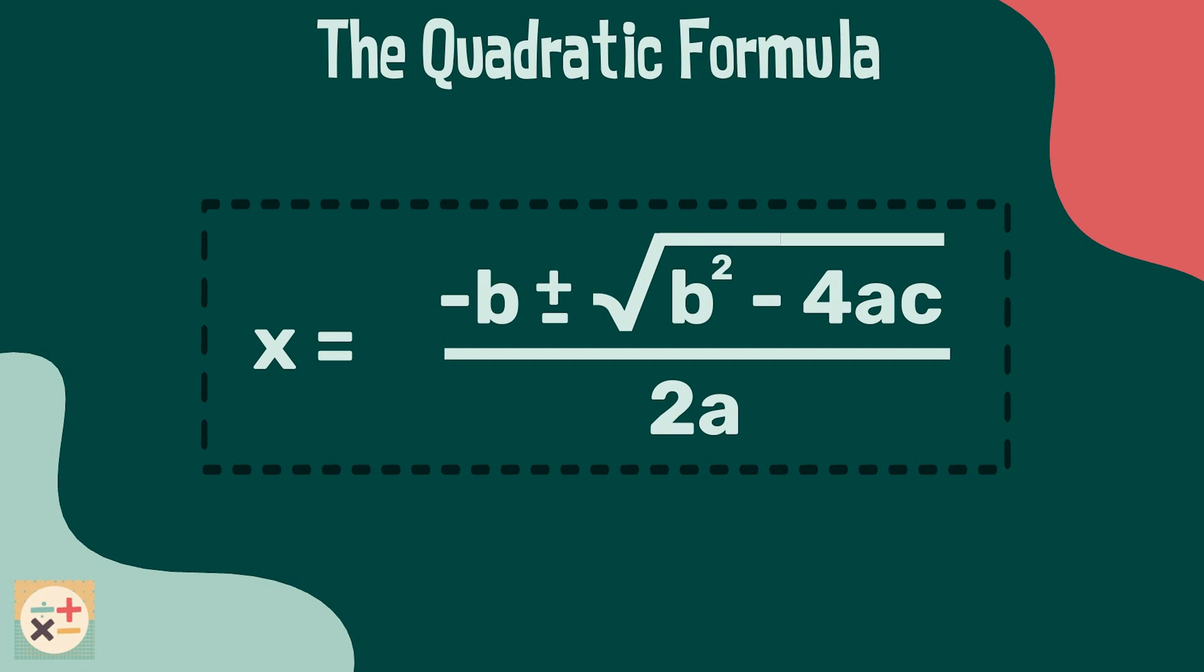The quadratic formula is handy to use when factorization isn't possible or isn't obvious to you. It is also useful if you need your answers in decimal form, fractions or surds. Exam questions may also specify that you use this formula rather than any of the other methods.